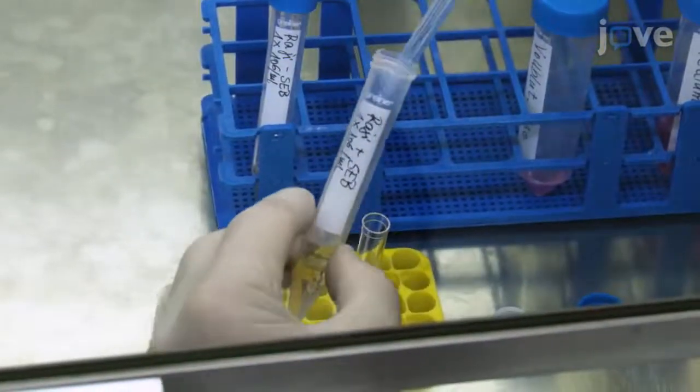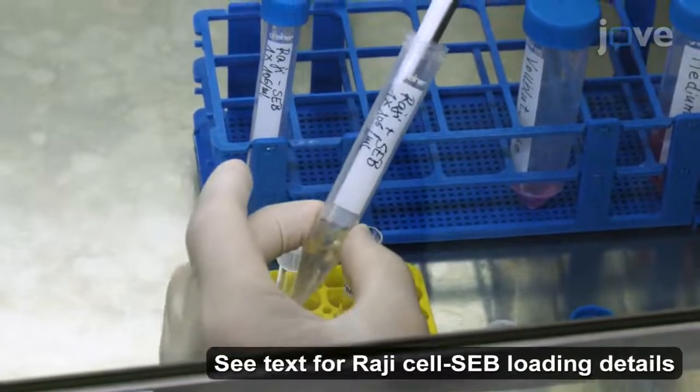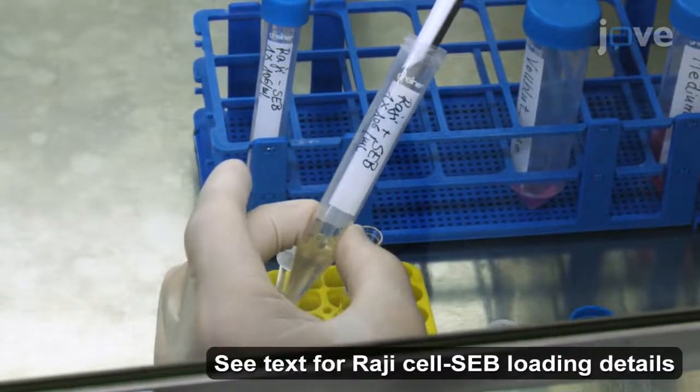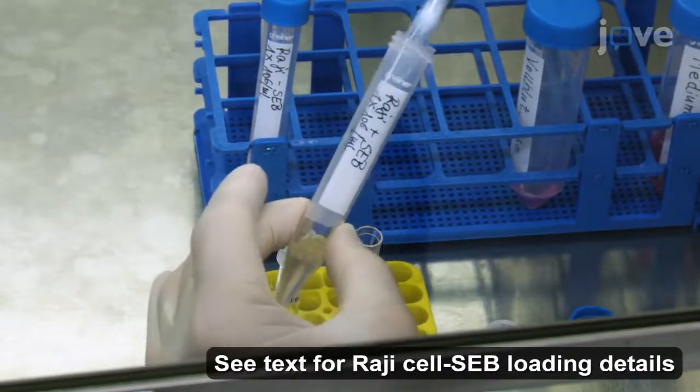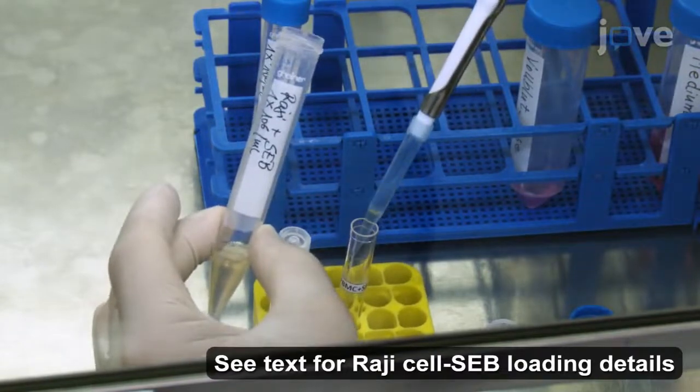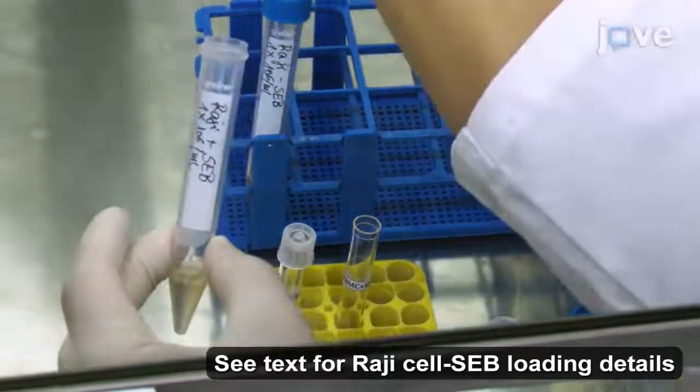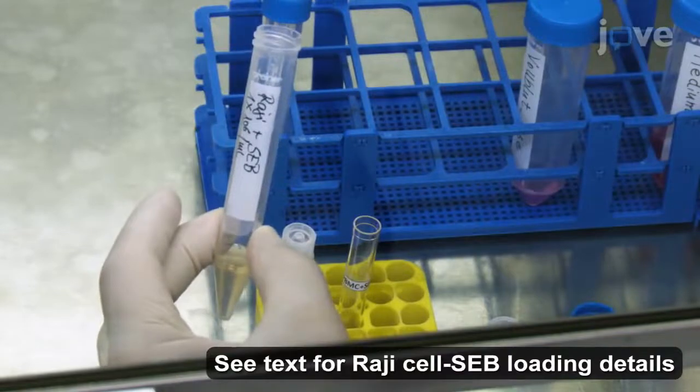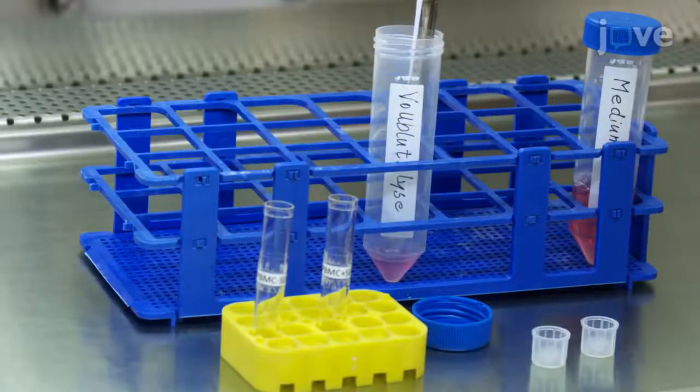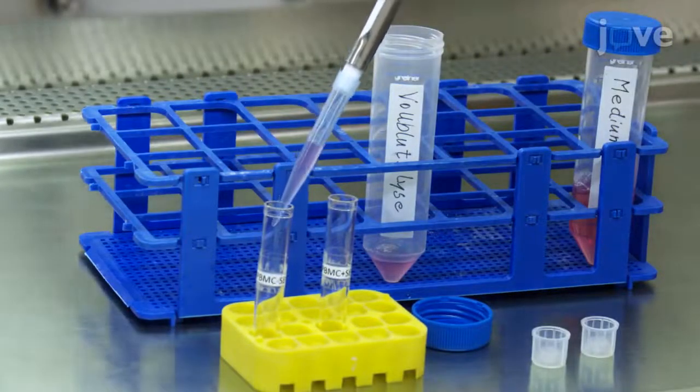At the end of incubation, add 5 x 10 to the 5th Staphylococcus aureus enterotoxin B or SEB loaded or unloaded RAGI cells in 500 microliters of culture medium into individual fax tubes, followed by 650 microliters of panleukocytes.